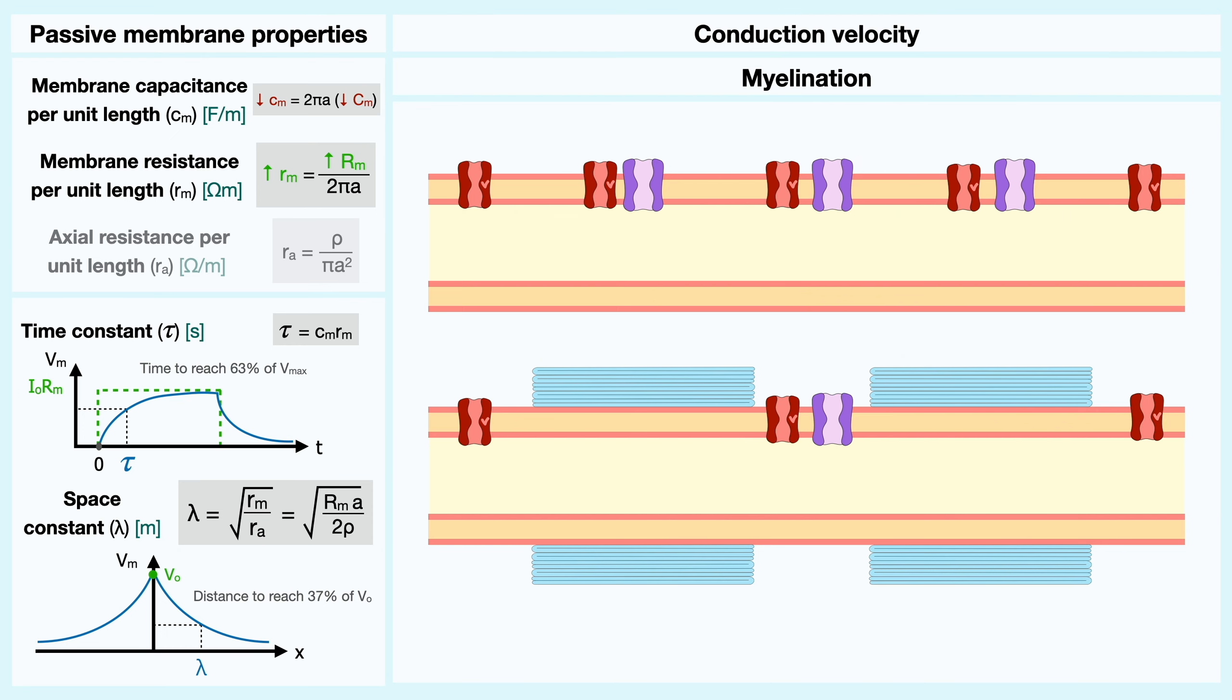The impact myelin has on the membrane resistance and capacitance can be further analyzed through the time and space constants. The time constant will remain somewhat unchanged because capacitance goes down and resistance goes up. When it comes to the space constant, here again, the increased membrane resistance will yield a higher constant and as you expect, the conduction velocity will be increased.